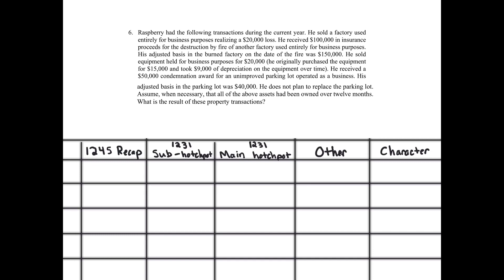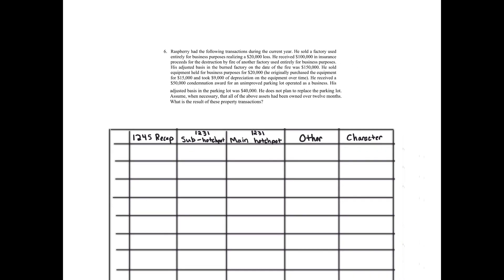He received a $50,000 condemnation award for an unimproved parking lot operated as a business. His adjusted basis in the parking lot was $40,000. He does not plan to replace the parking lot. Assume when necessary that all the above assets have been owned over 12 months. What is the result of these property transactions?